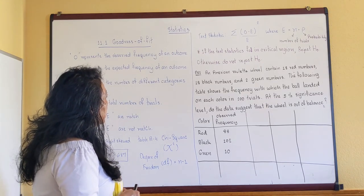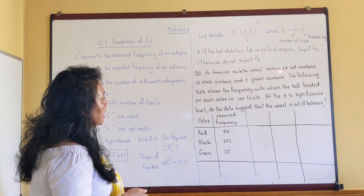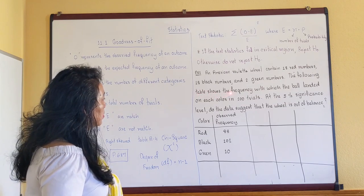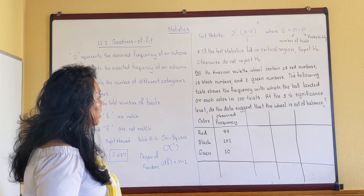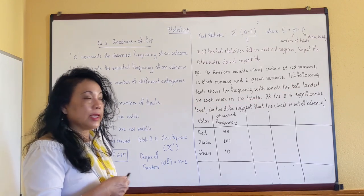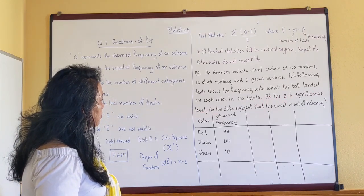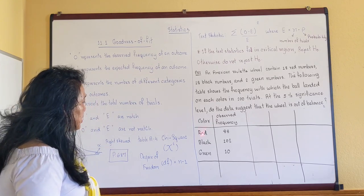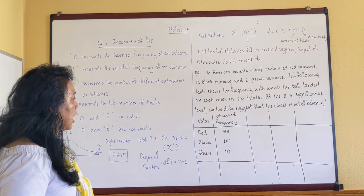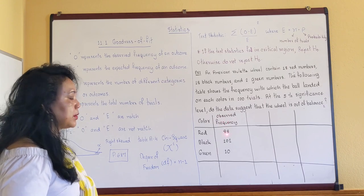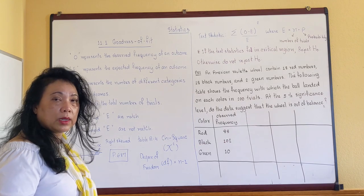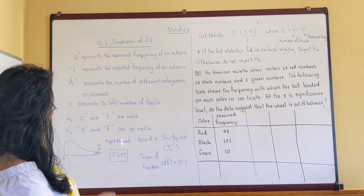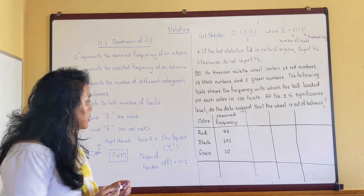Let's look at the first example. An American roulette wheel contains 18 red numbers, 18 black numbers, and 2 green numbers. The following table shows the frequency with which the ball landed on each color in 200 trials. At the five percent significance level, do the data suggest that the wheel is out of balance? So you play 200 times. The colors are red, black, and green. The observed frequencies are: red landed 88 times, black 102 times, and green 10 times. That's your capital O, the observed frequency.